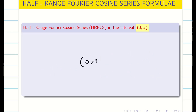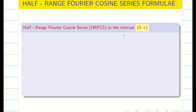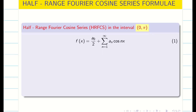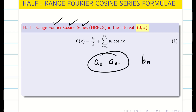For half-range Fourier series, the limits are 0 to pi or 0 to L — we are taking only the positive side. For the half-range Fourier cosine series, the formulas contain only a₀ and aₙ. For the half-range Fourier sine series, it contains only bₙ. The remaining two terms will become zero.